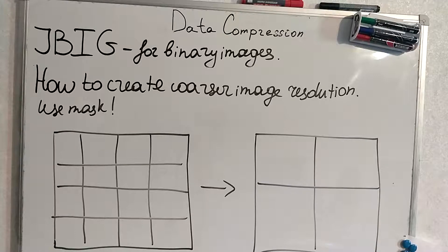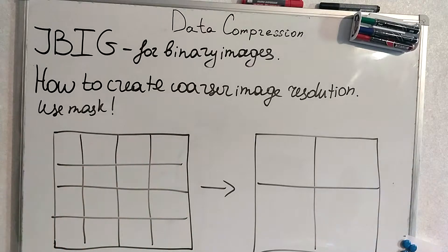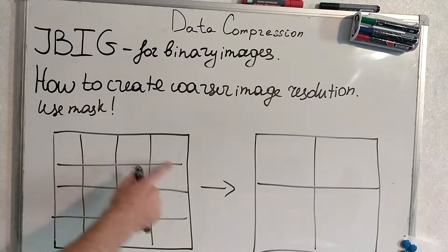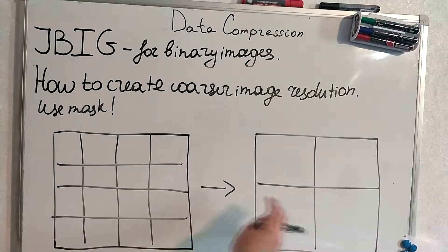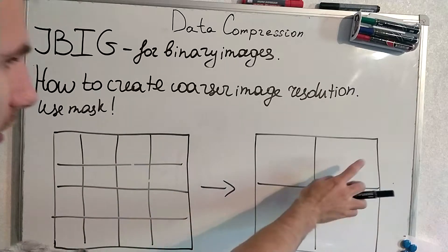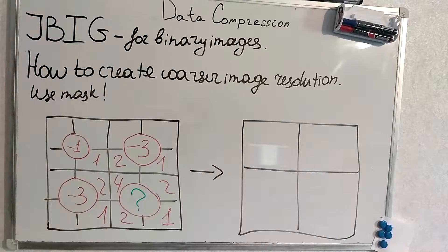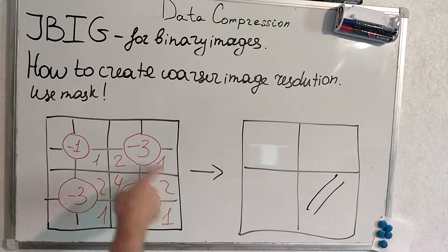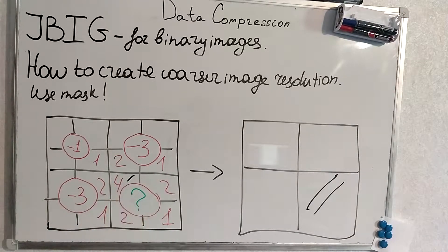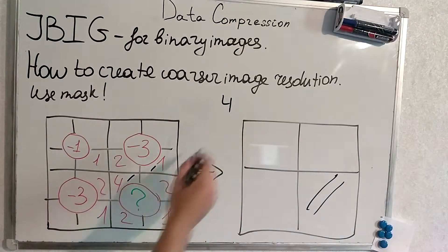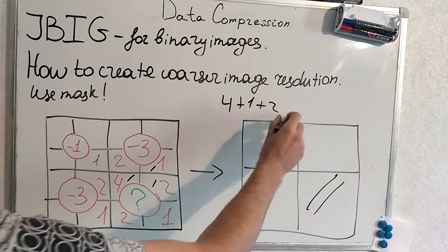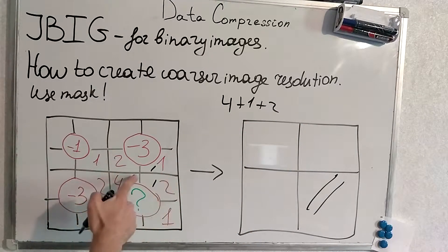How does that actually work? We have some area on our image which contains 16 pixels, and we will make a coarser resolution from that — each 4 pixels will become 1 pixel. We use a mask to determine whether this pixel will be black or white in the coarser resolution. We will compute a weighted sum of all the pixels: if a pixel is black, it contributes its weight (4, 2, 1, etc.) into the sum.